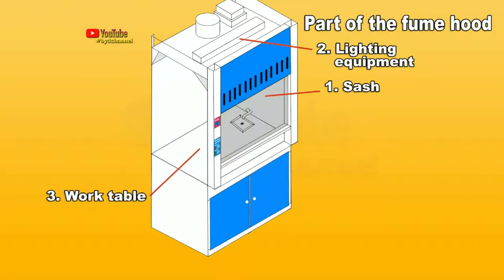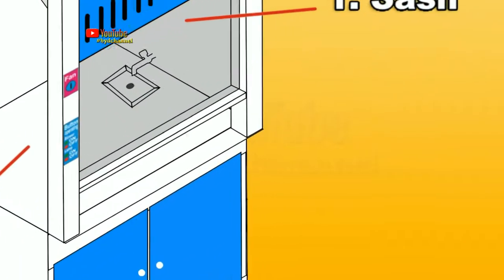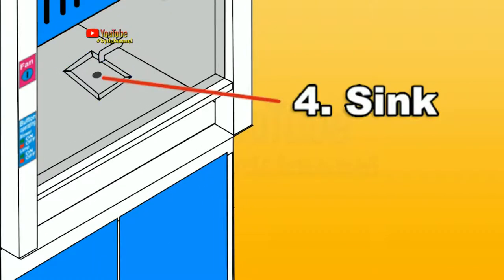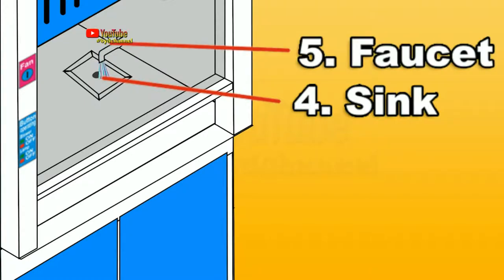Three: Top table or work table, made of phenolic resin that is resistant to chemicals. Four: Sink, where the device is washed after the trial to keep it clean. Five: Faucet - water tap for washing and rinsing tools.